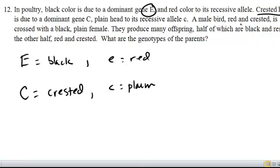Let's read the rest of the problem. A male bird, red and crested. Now this is the symbol for male. He's red and he's crested, so he must be lowercase e, lowercase e for red. If he's red and crested, he's going to have at least one dominant allele, we don't know his next allele.